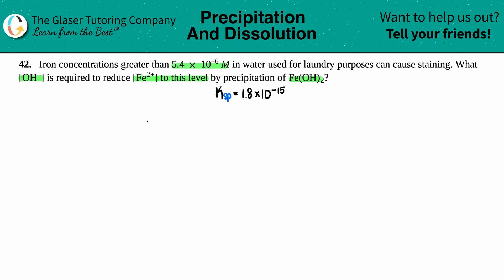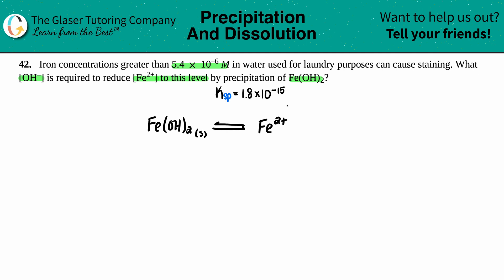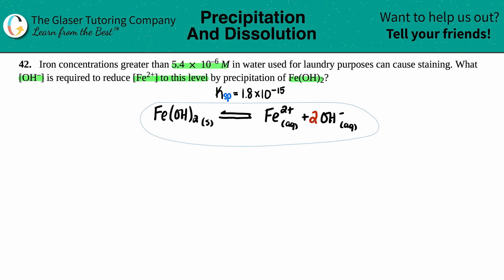Let's write out the balanced equation. We have iron(II) hydroxide, Fe(OH)₂, as a solid. With the balanced equation it always dissociates into its two ions: Fe²⁺(aq) plus OH⁻(aq). Now let's make sure this equation is balanced — I see two hydroxides, so I put a 2 in front of the OH, and now the equation is balanced.